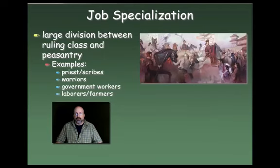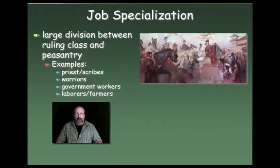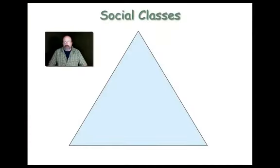In terms of job specialization, there were large divisions between the ruling class and the peasantry. At the top of society were priests, scribes, warriors, and government workers. The Chinese sort of invented the concept of a bureaucratic system of government — they've had the world's first and longest-lasting system of government. At the bottom end of the spectrum were laborers and farmers, so there was really a big distinction between those at the top and those at the bottom.